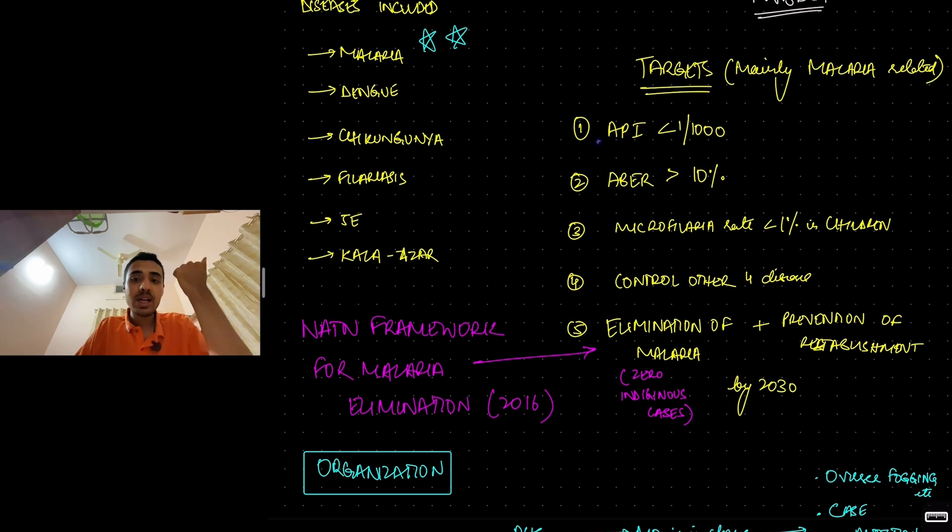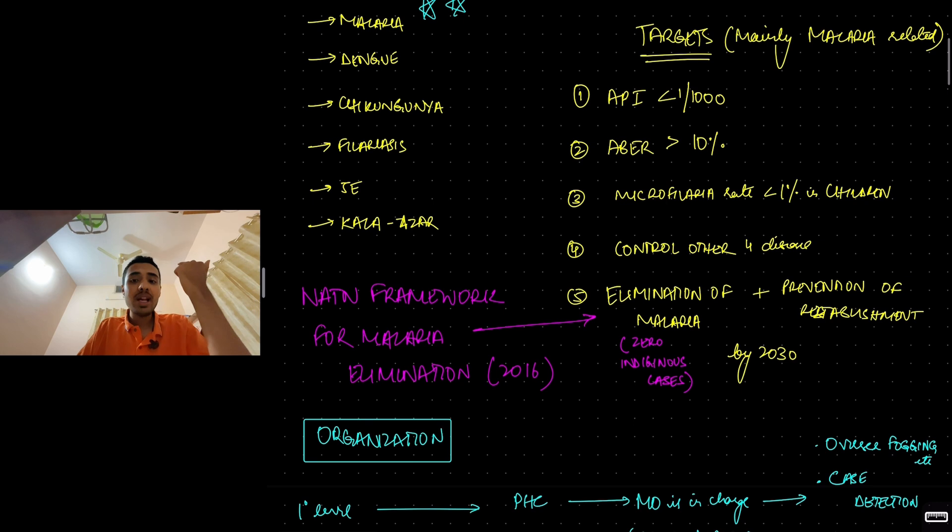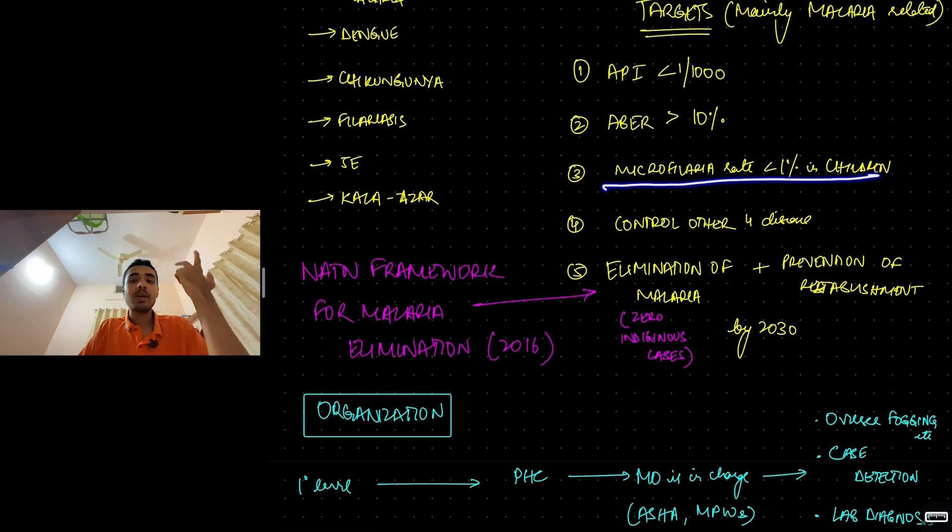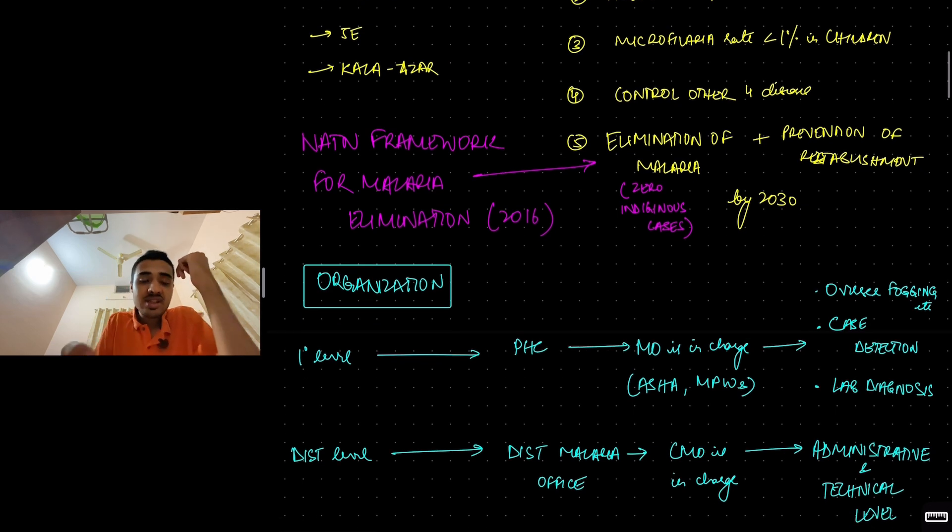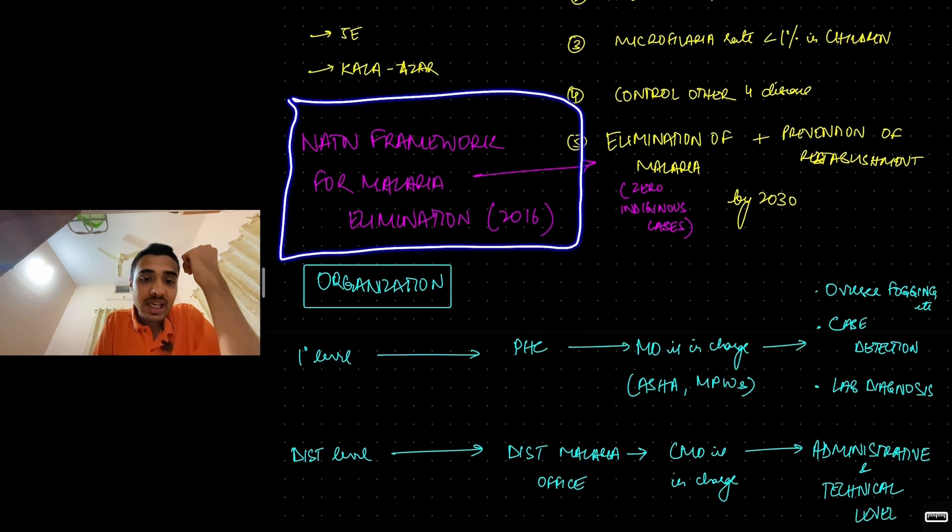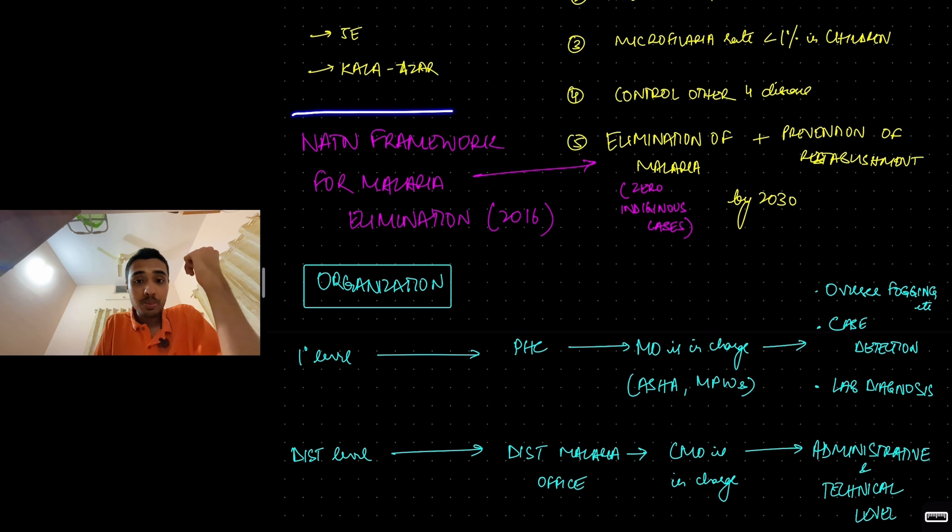Annual parasite incidence should become less than 1 per 1000. Annual blood examination rate should become more than 10%. This is with respect to filariasis. Microfilaria rate in children should be less than 1%. You should control the other four diseases: Dengue, Chikungunya, Japanese Encephalitis, Kala-azar. Then, in 2016 came the national framework for malaria elimination.